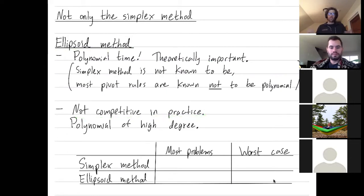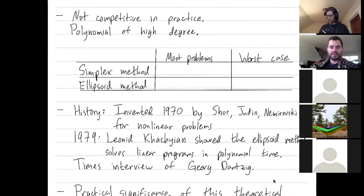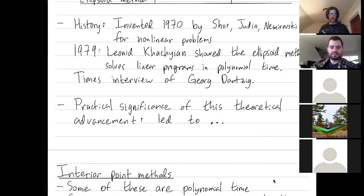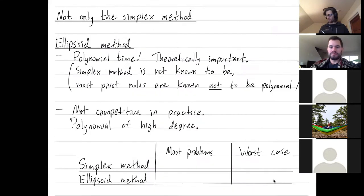So whenever you're trying to solve a linear programming problem on a computer essentially do not use the ellipsoid method. There are much better methods. The simplex method is better. And there's even interior point methods, which are also polynomial time, but much, much, much faster.